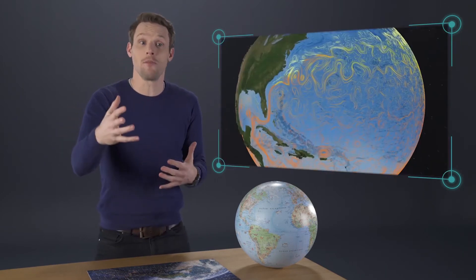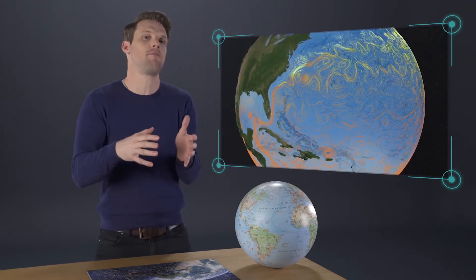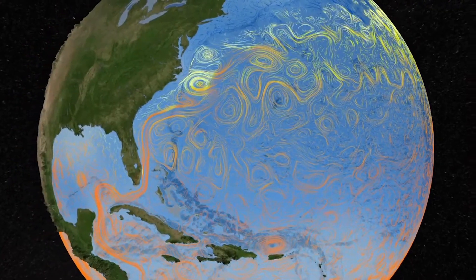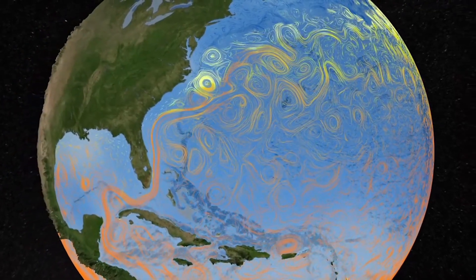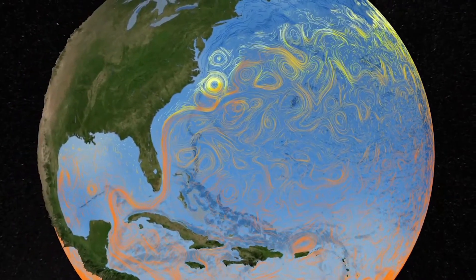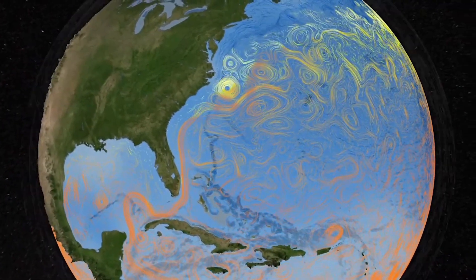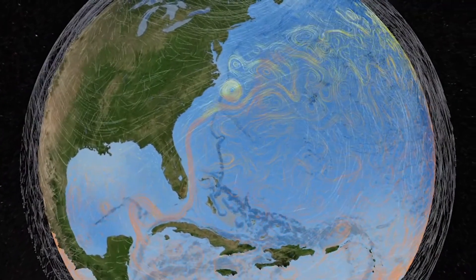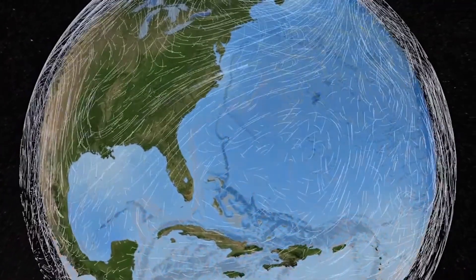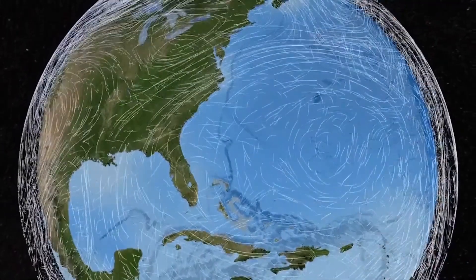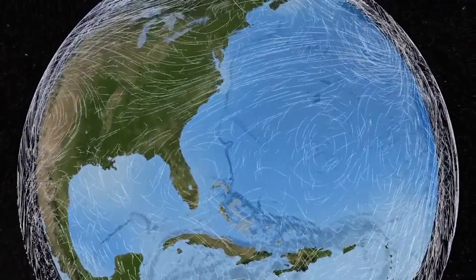The currents are driven by local temperature and the salinity of the water — how salty it is. At its surface, the ocean also interacts with air, with the atmosphere, creating the trade winds and the jet stream that you may have heard of.